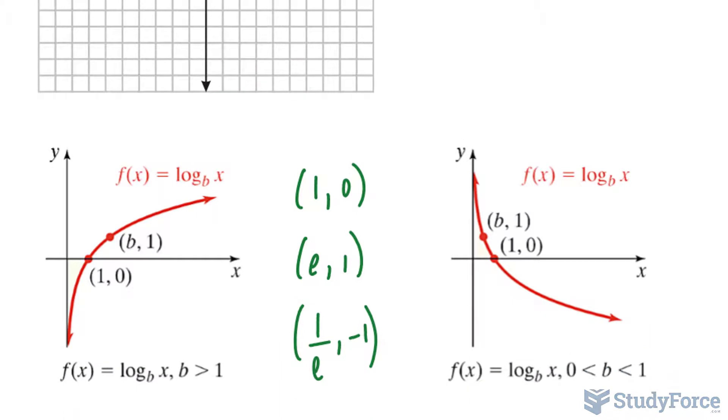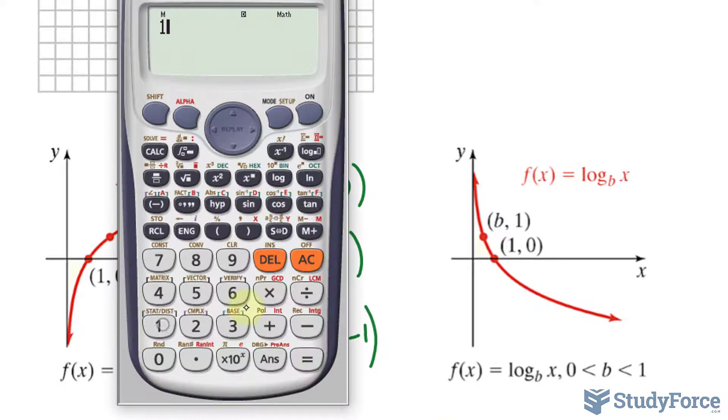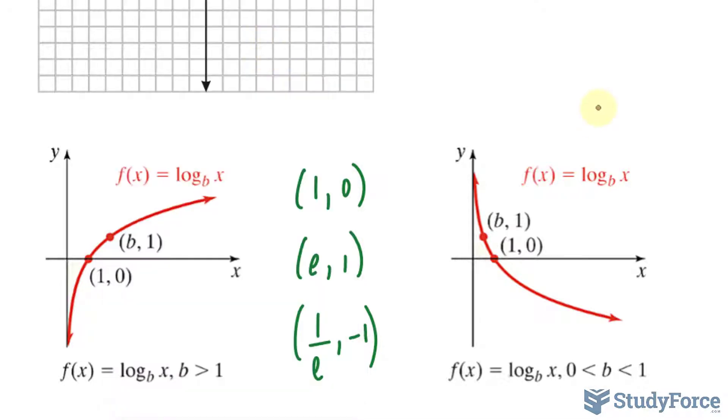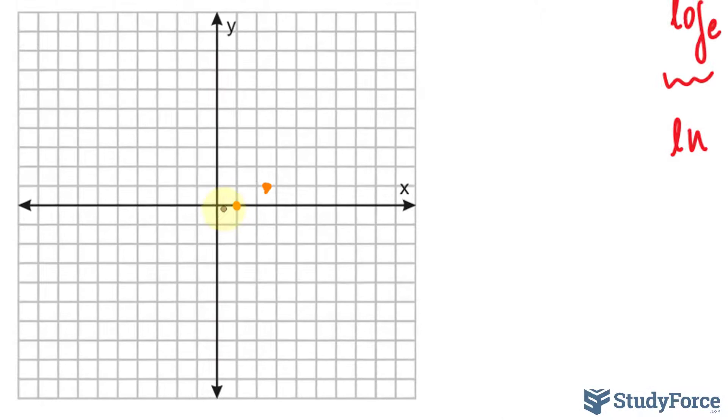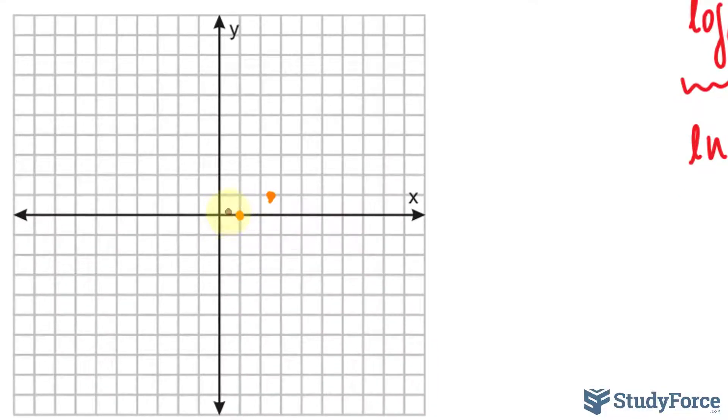And our final point will be 1 over e and negative 1. So if you want to find out what 1 over e is, just do 1 divided by 2.71. It doesn't have to be extremely accurate because usually I would say use the number e on your calculator, but I just want a rough estimate. It's around 0.37. 0.37 is between obviously this and that. So a third along the way, let's say it's right here.